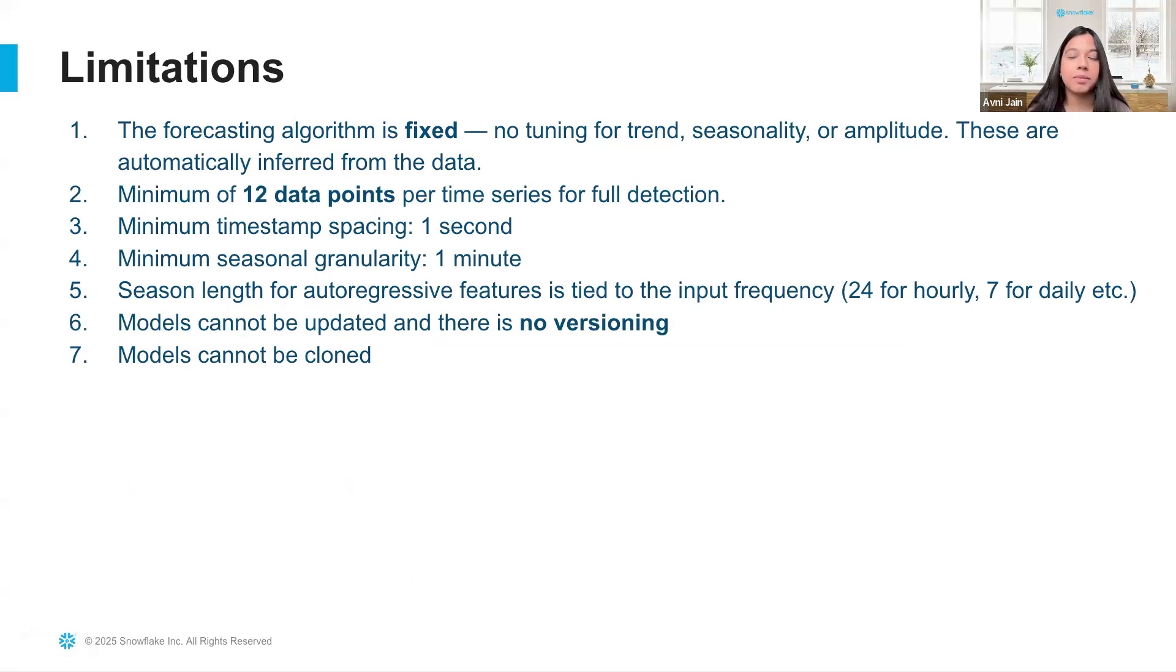The minimum timestamp spacing is one second and minimum seasonal granularity is one minute. The seasonal length for autoregressive features is tied to the input frequency so it would be 24 for hourly, 7 for daily, and more.